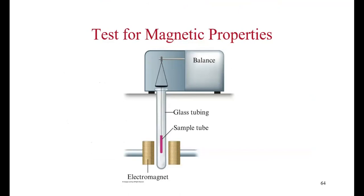You can test paramagnetism experimentally by suspending a sample tube from a balance and bringing it close to an electromagnet. If the substance is paramagnetic — meaning it has unpaired electron spins and a net magnetic field — it will be drawn into the magnet. From the weight change on the balance, you can calculate the strength of the magnetic field and determine how many unpaired electrons are in the structure.